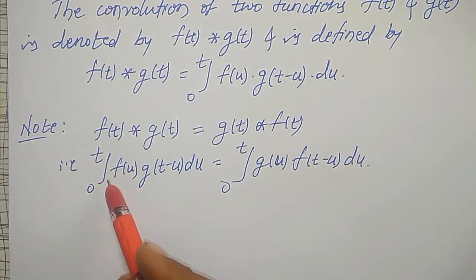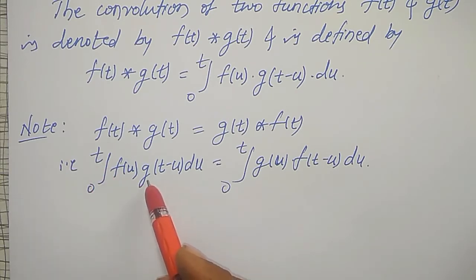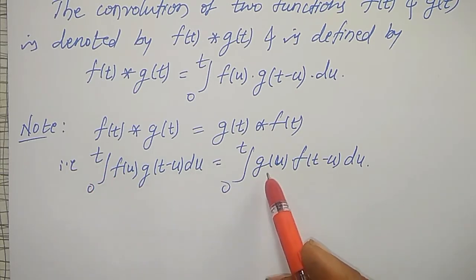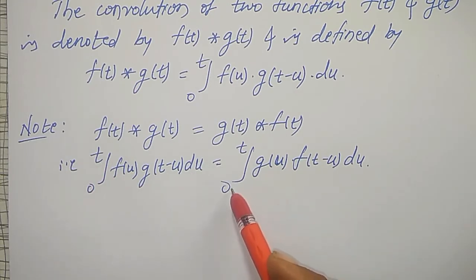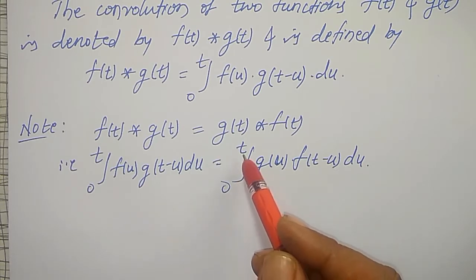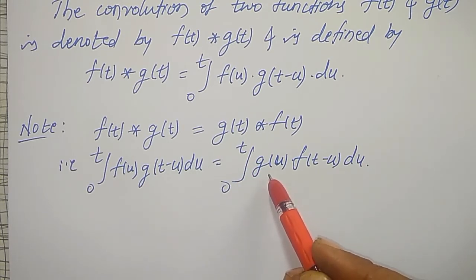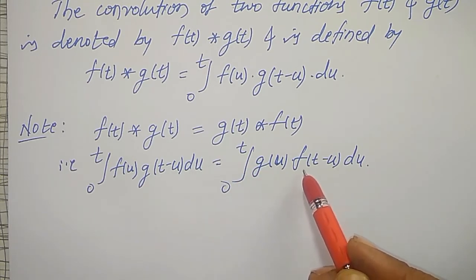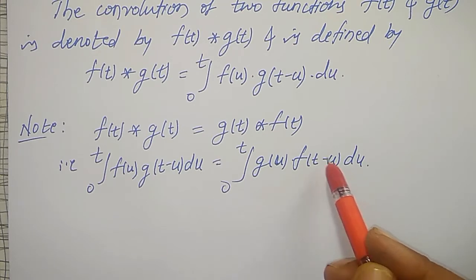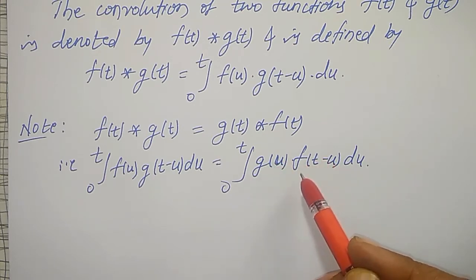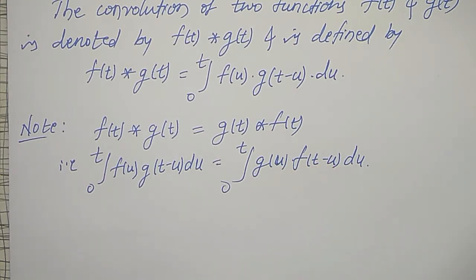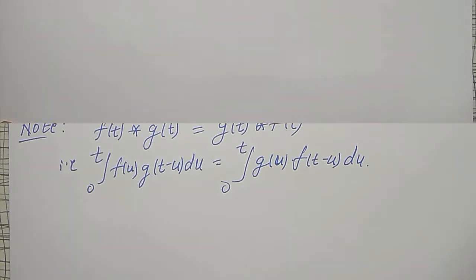That is, its integration is integration from 0 to t of f of u into g of t minus u du. Also, I can write it as integration from 0 to t of g of u into f of t minus u. Then after integration, I am going to get it as a function of t only. Using this, let me define the convolution theorem now.